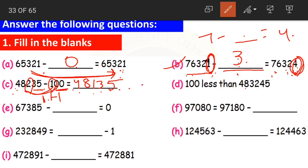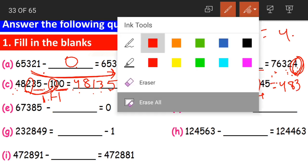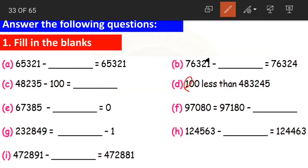Question D: 100 less than 4,83,245. Again, 1 is at the hundreds place, so the change occurs only in the hundreds place. The remaining digits are written as they are: 4, 8, 3. Less than means we subtract — 2 minus 1 is 1, and 4 and 5 remain as they are. Only the change has occurred in the digit in hundreds place.